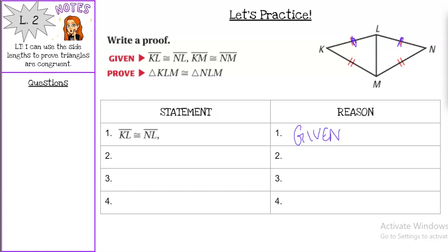And then we have KM is congruent to NM. Again, you can see that marked with those tick marks, so that would be our second statement, also given. We have side, side, so in blank number three we would want to put a third side because then we could use our side-side-side congruence postulate.